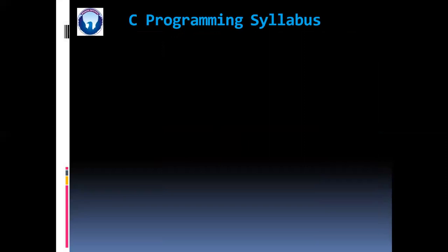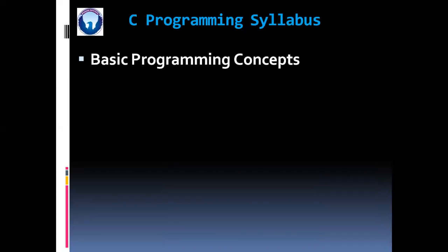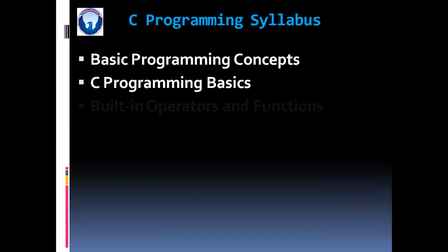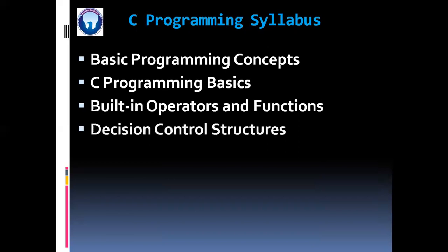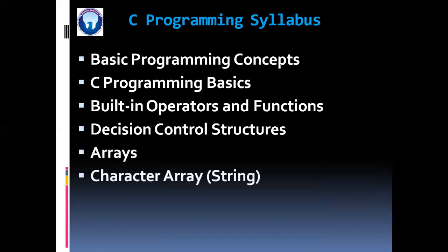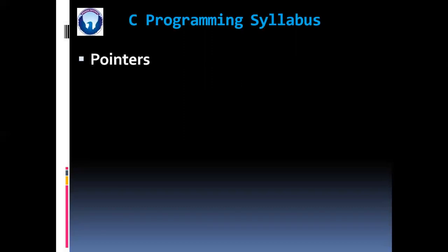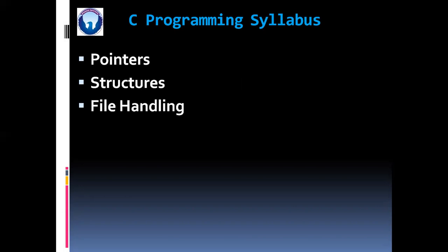Now we are going to discuss the entire syllabus of our course. In C, first we are going to see the basic programming concepts, then C programming basics, then built-in operators and functions, decision control structures, arrays, character arrays (means strings), functions, pointers — the most important concept of C language — then structures, and at the end, file handling in C.